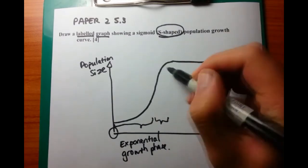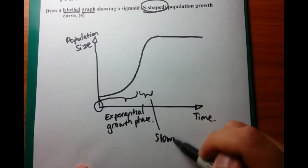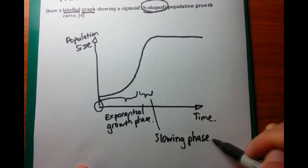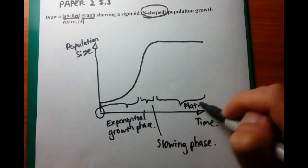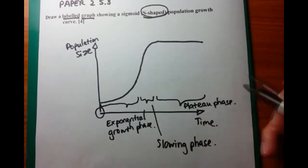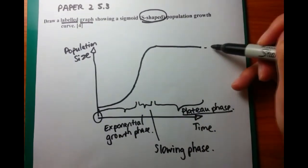The second bit is called the slowing phase. And this is where the growth still increases, but increases at a slower rate. And then finally we have the plateau phase, where you have an equal number of deaths to births, and equal number of natality to mortality.